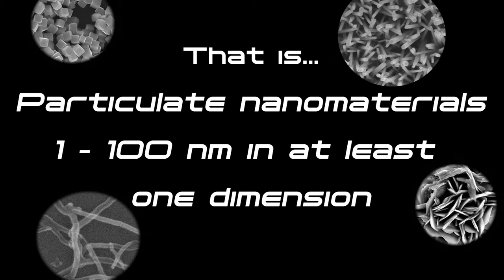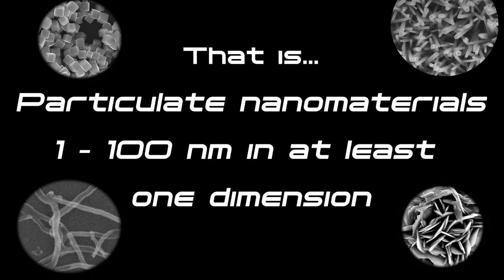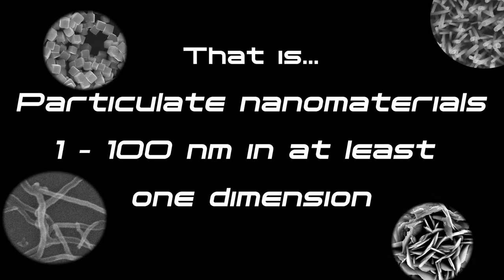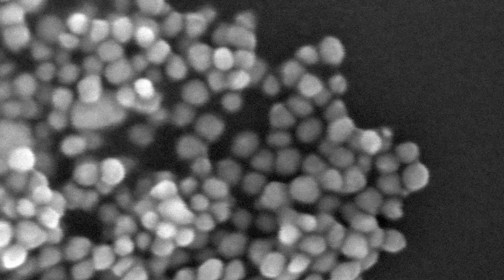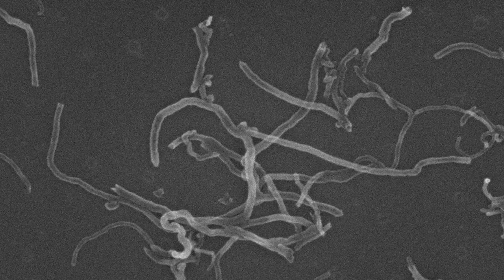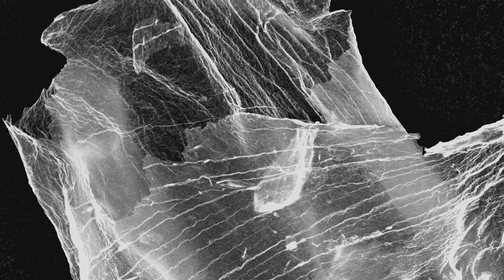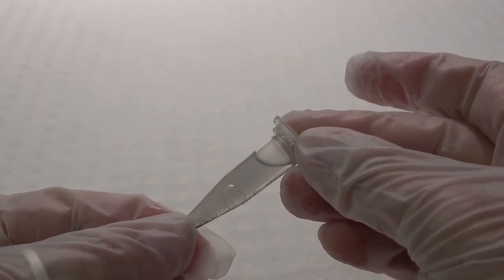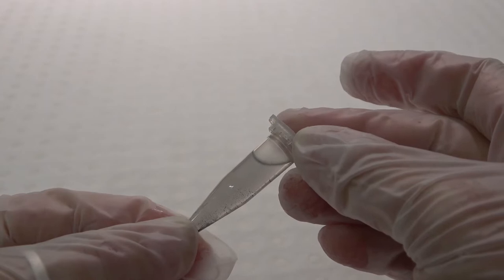Here, we use the term nanoparticles to refer to any particulate nanomaterials ranging in size typically between 1 and 100 nanometers in at least one dimension. Examples include nanospheres, nanocubes, branch nanoparticles, nanotubes, nanorods, and nanosheets. The technique described here can also be used to prepare fine non-nanopowdered samples in suspension for SEM examination.